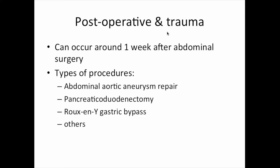It's important to remember that patients can develop chylos ascites after surgery due to trauma to lymphatic structures. It can occur around one week after abdominal surgery. Potential surgeries include abdominal aortic aneurysm repair, pancreaticoduodenectomy, and Roux-en-Y gastric bypass. Any surgery near the thoracic duct or cisterna chyli is a risk, and the clinician needs to keep this in mind.